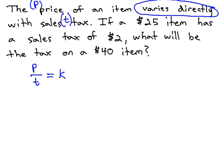Now, we're ready for step 2 to find that constant using the given information. This given information should be the numbers that go together. The $25 item has a tax of $2. Those numbers describe the same situation.